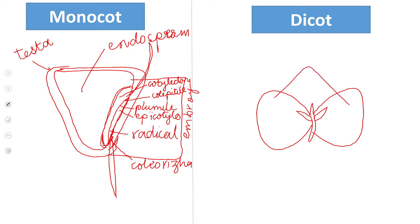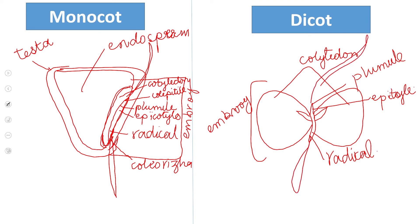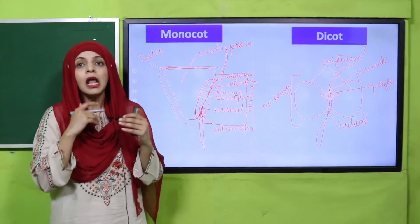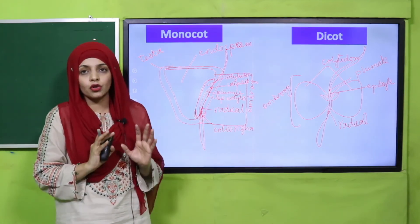In the dicot seed, there are two cotyledon leaves. The entire structure is the embryo — there is no endosperm in dicots. The epicotyle is present, then the plumule, and finally the radicle. The radicle will grow into roots and the plumule will grow into the first leaves and shoots. This rough sketch helps show the difference between monocot and dicot seeds and where the plumule and radicle are located.